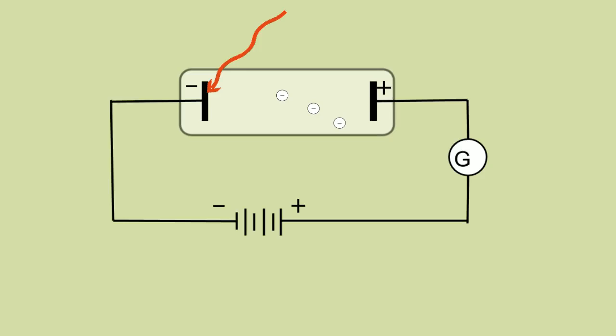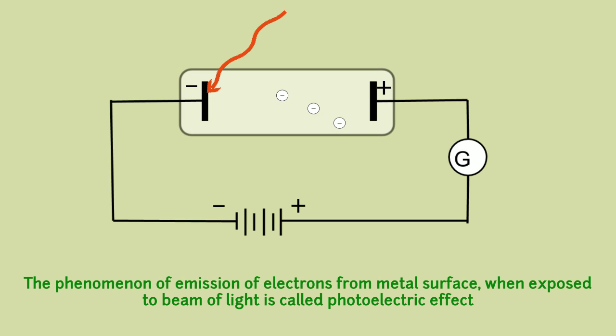The phenomenon of emission of electrons from metal surface when exposed to beam of light is called photoelectric effect. The electrons emitted due to this effect are called photoelectrons.